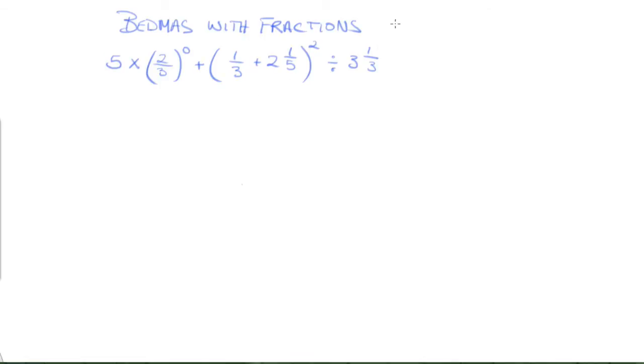So according to BEDMAS, and I'll write that down over here in red so that I don't forget, what I'm supposed to do first is anything inside a bracket. So inside my brackets over here, I've got 1/3 plus 2 and 1/5. So I'm going to start with that.